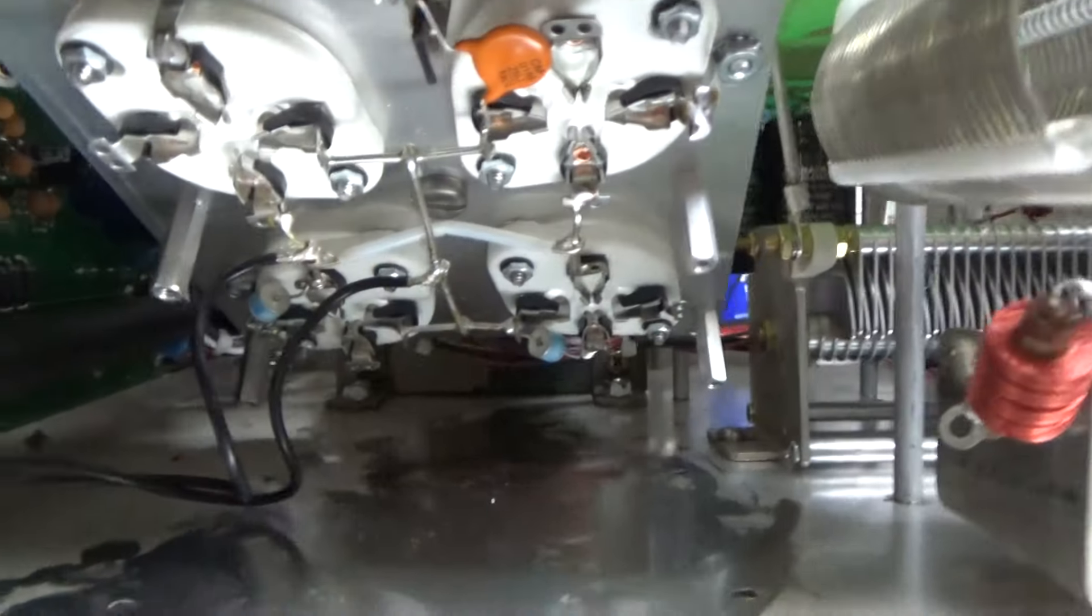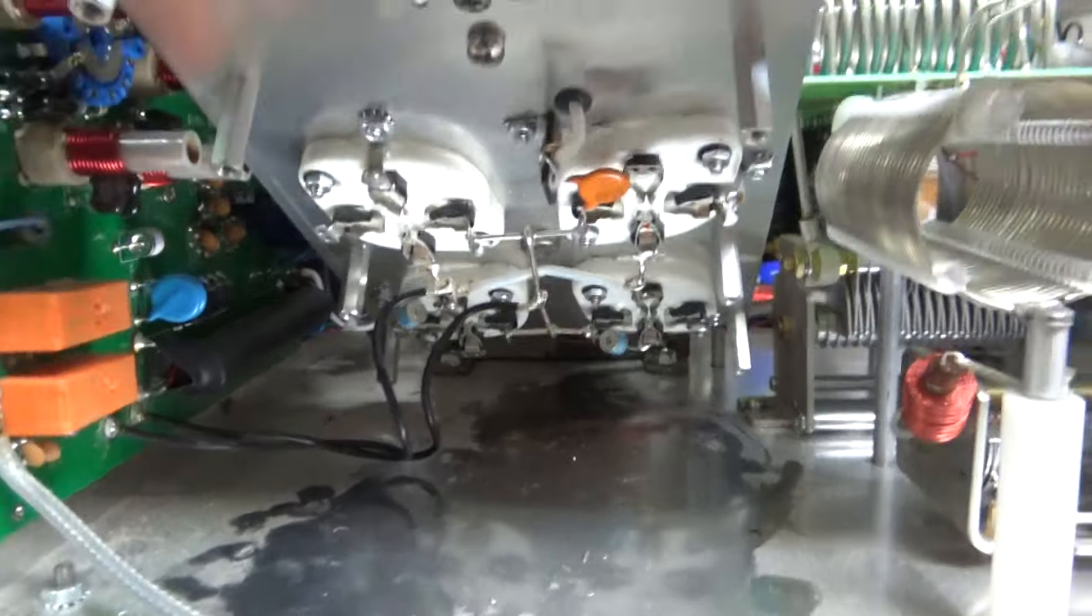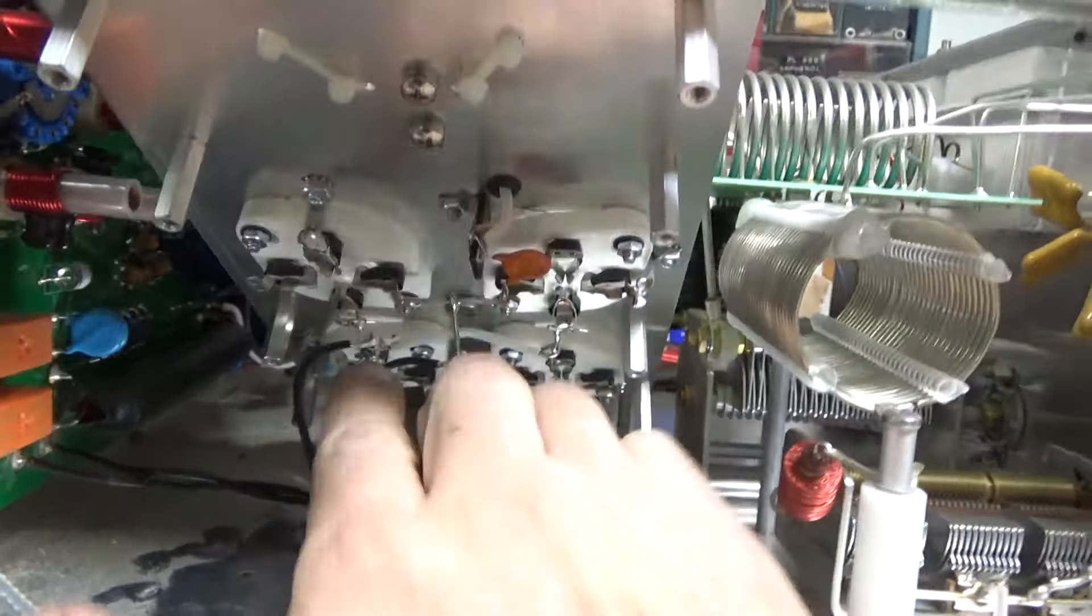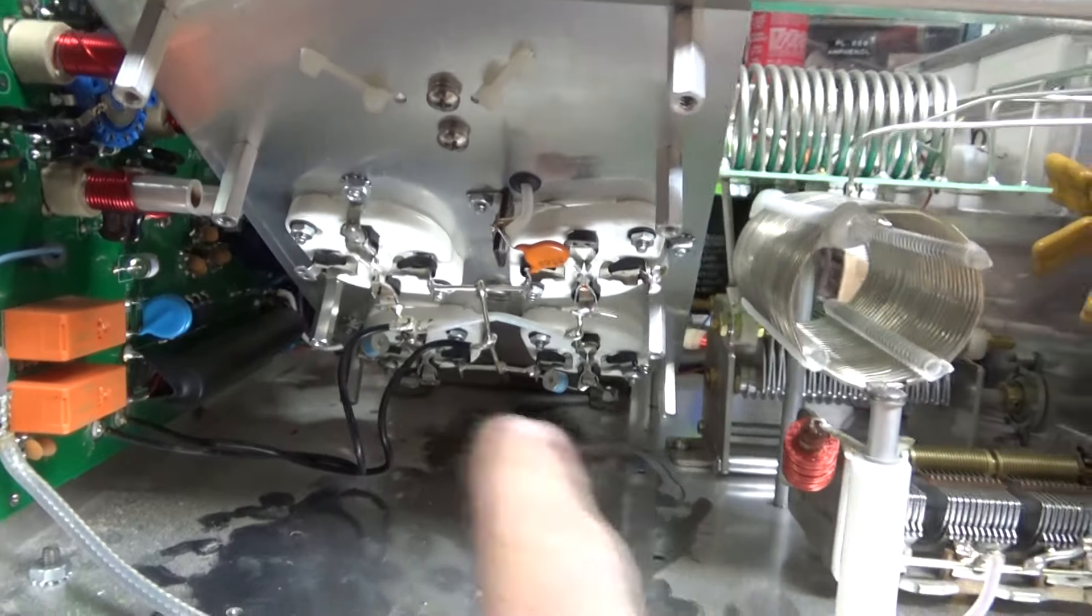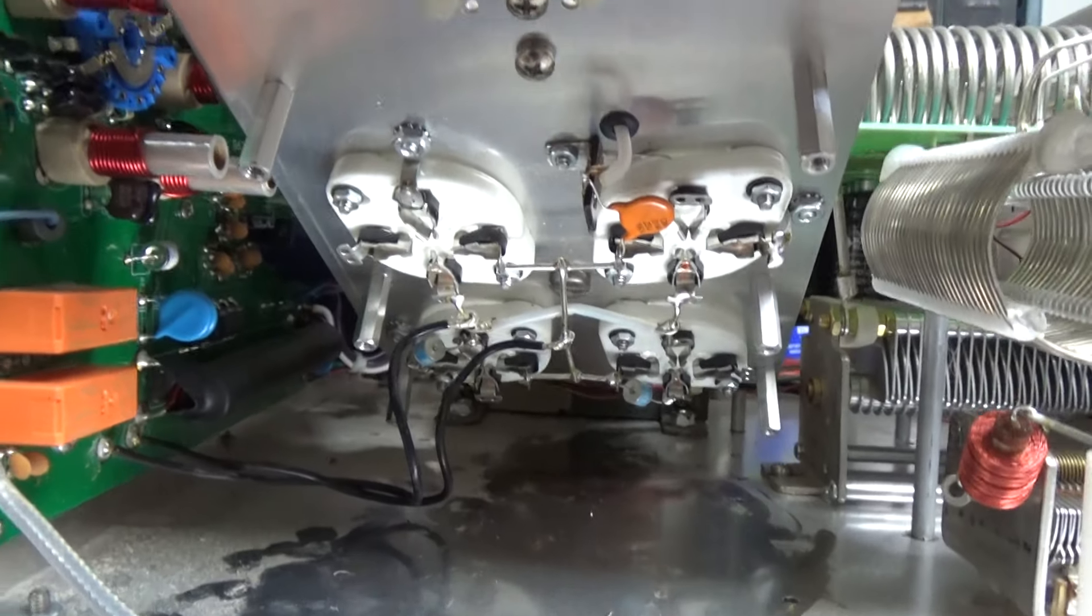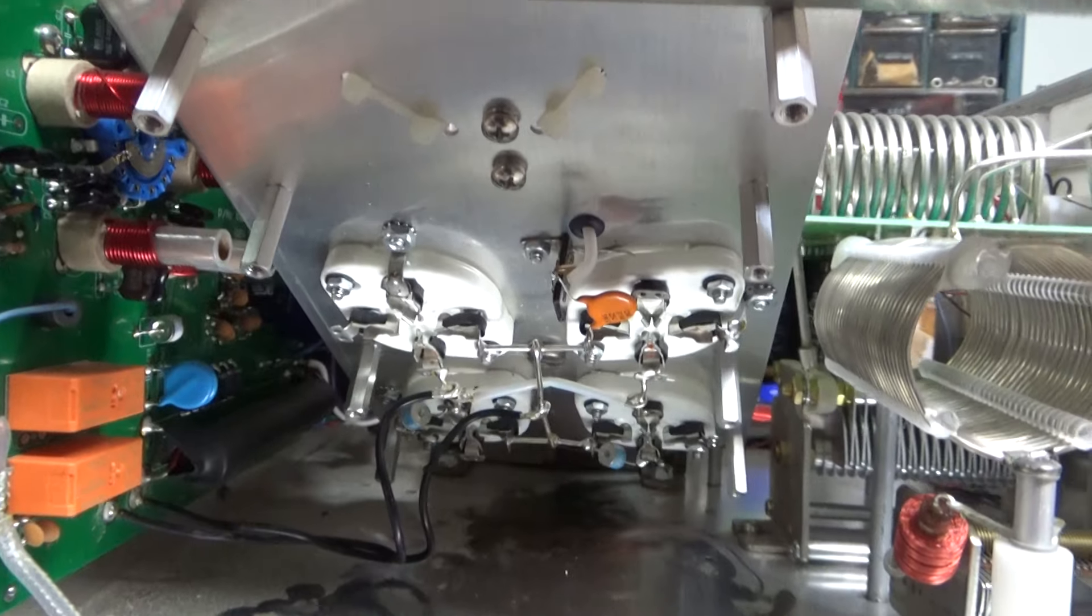So I added the gas discharge tubes, compressed the socket clips. Just have to solder this one connection. I already soldered the other filament connection. Added the gas discharge tubes and put in the longer screw for the plate choke and repaired the plate choke.